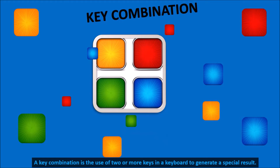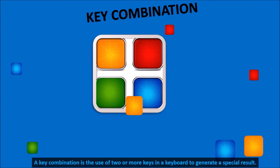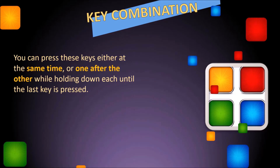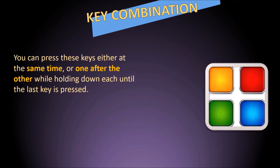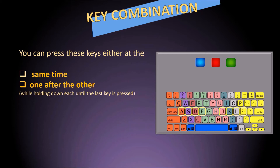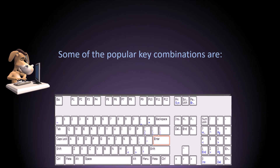Key combination is the use of two or more keys on a keyboard to generate a specific result. You can press these keys either at the same time or one after the other while holding down each key until the last key is pressed. Some popular key combinations are Alt+F4, which closes the current software window, and Ctrl+Alt+Delete, which restarts the computer.